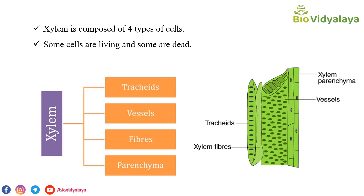Next is xylem fibers. Xylem fibers are non-living sclerenchyma cells — they are dead cells and do not contain protoplasts at their maturity. These cells are found in between the tracheids and vessels. They have a thick lignified secondary cell wall with a very narrow lumen. The main function of xylem fibers is to provide mechanical support.